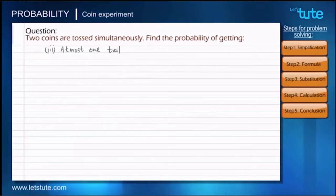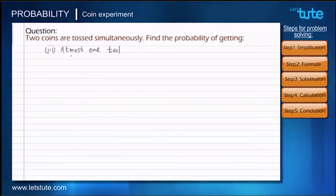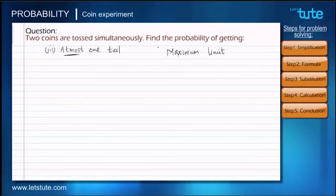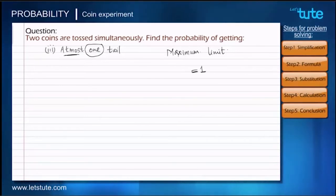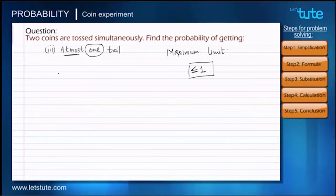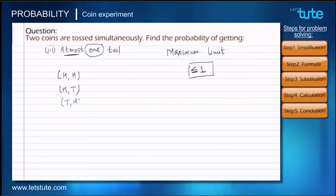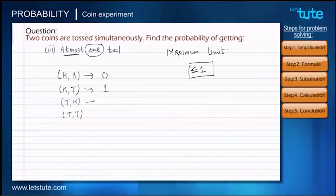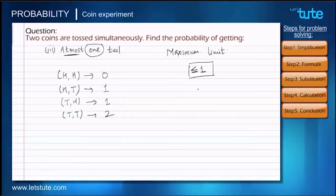Now let's move on to the third sub-question: find the probability of getting at most one tail. When we hear 'at most' it refers to a maximum limit, and the maximum limit here is one. This means the outcome should have a maximum of one tail or fewer, which we write as less than or equal to one. We check each outcome: the first has no tail, the second and third each have exactly one tail, and the fourth has two tails.